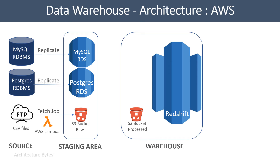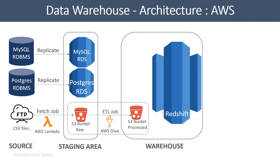For the warehouse, we use Redshift as our warehouse database and an S3 bucket to hold processed files. Redshift is a highly scalable database and very suitable for data warehousing functions. Now let us look at how we extract, transform, and load data from staging to the warehouse. In order to process the files in the S3 raw bucket and load them into the S3 processed bucket, you need an ETL job. You can write an AWS Glue job to achieve this. As part of this job, you might be cleaning and reorganizing the files.